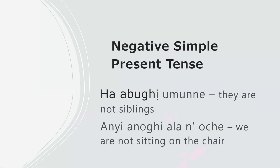So the first set we are going to talk about here is negative simple present tense, or simply negative present tense. The first example we have here is 'Haa abohi umunne,' which means 'they are not siblings.' Take note of the 'hi.' Adding the verb 'ibo' and 'hi,' you get the negative aspect of a present tense.